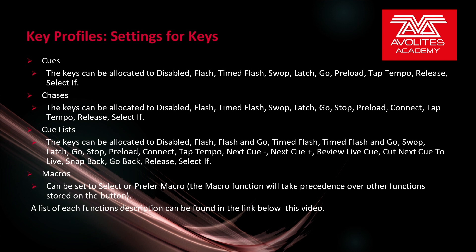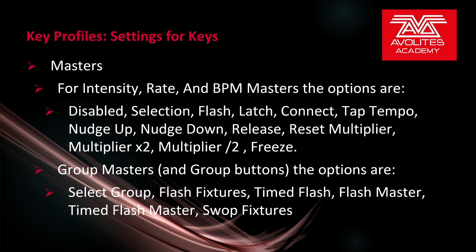If the item is a macro, it can be set to either select or prefer macro — the macro function will take precedence over other functions stored on the button. A link to each function's description can be found in the manual, which we'll link to in the video's description below. If the item is a master — such as a rate, intensity, or BPM master — the options are: disabled, selection, flash, latch, connect, tap tempo, nudge up, nudge down, release, reset multiplier, multiplier 2x, and multiplier divided by 2.